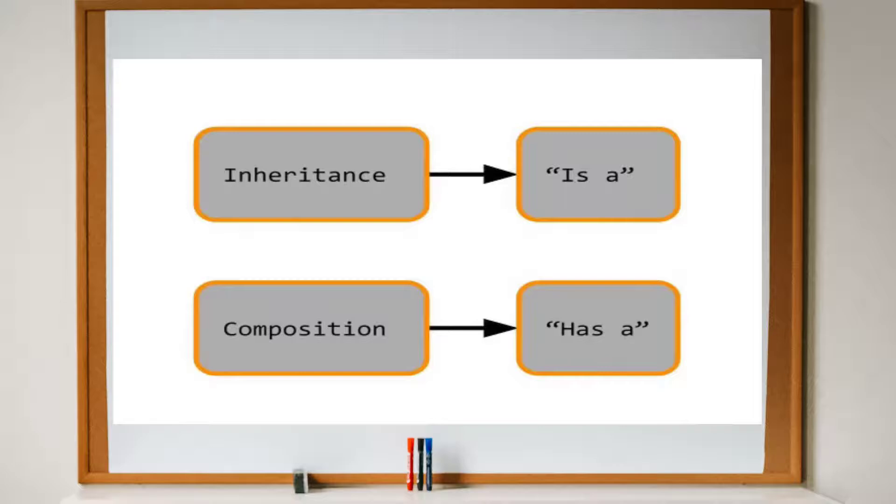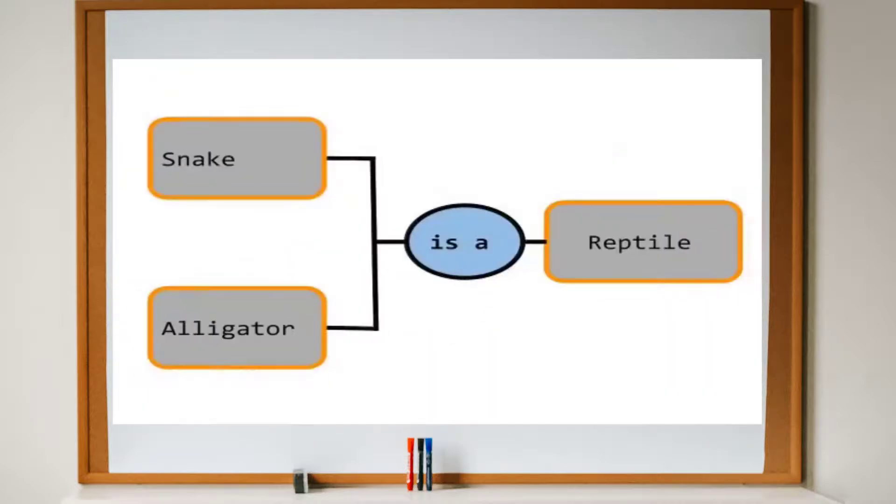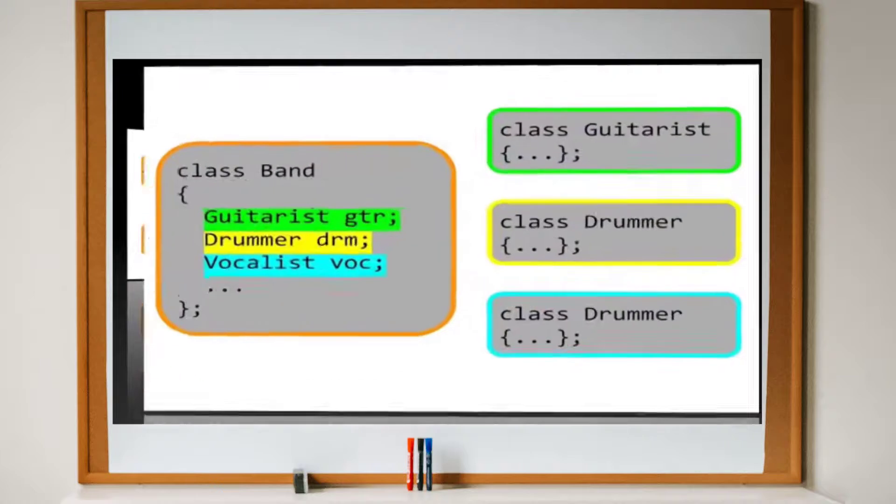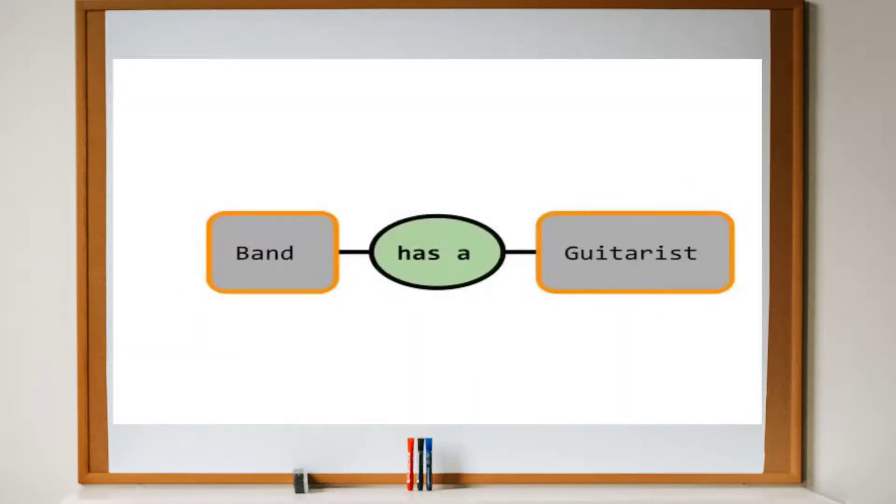Inherited classes are commonly described as having an is-a relationship with each other, while composition involves a has-a relationship between classes. We can say that Snake is a Reptile and that Alligator is a Reptile, but we cannot say that Guitarist is a Band. Instead, we say that the Band has a Guitarist.